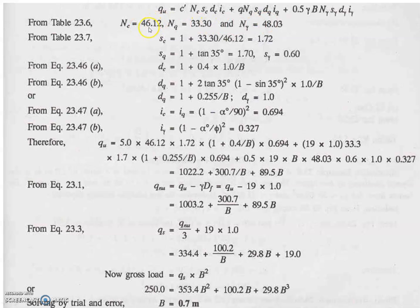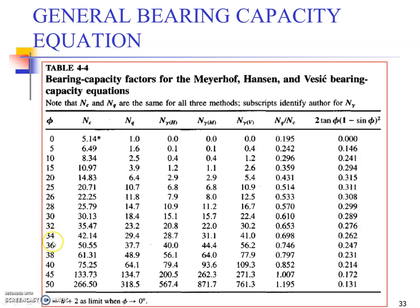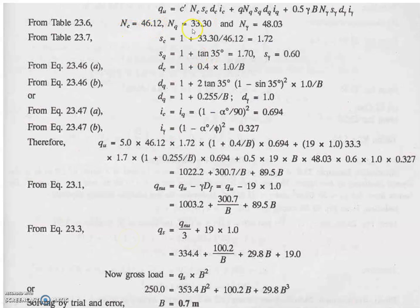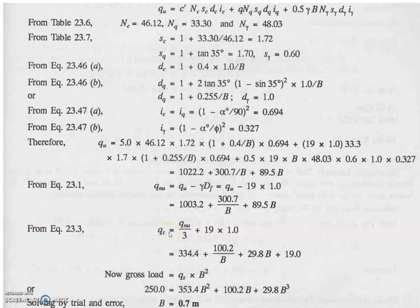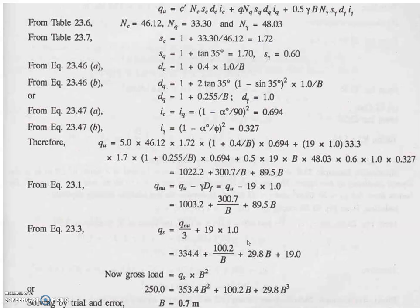The Nc, Nq, and N-gamma values are 46.12, 33.3, and 48.03. Our phi value was 35, so we go back to the table. Our 35 lies between 34 and 36 degrees in the table, so between 42 and 50 it must be around 46. Let's double check: 46.12 for Nc, 33.3 for Nq. They are using Vesic value, not Hansen's or Meyerhof's value. The Vesic value should be somewhere around 48, and it is 48 over here.